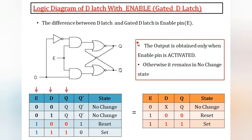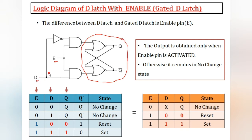This is the D latch with enable condition. This is the circuit diagram of D latch with enable. This is the enable pin. This half is the SR latch. For this SR latch, two extra inputs are added — D and E. Two AND gates are used: D goes directly to one AND gate, and D is inverted going to the other.